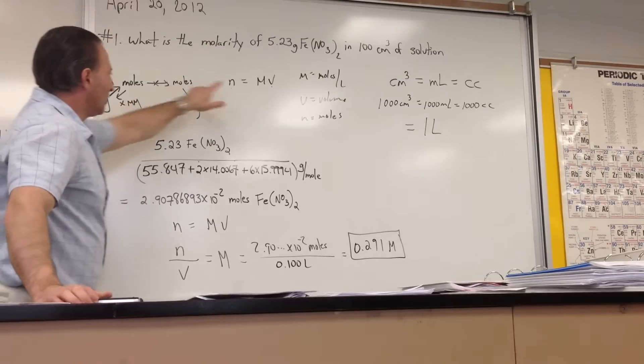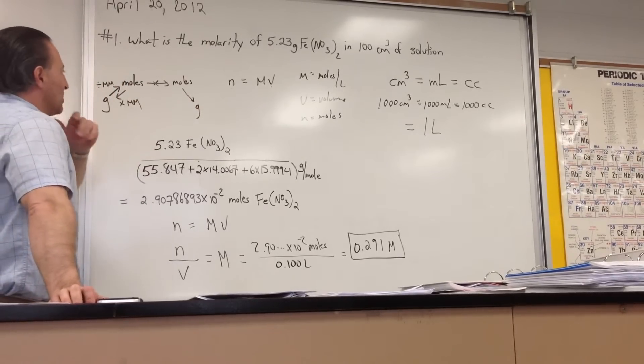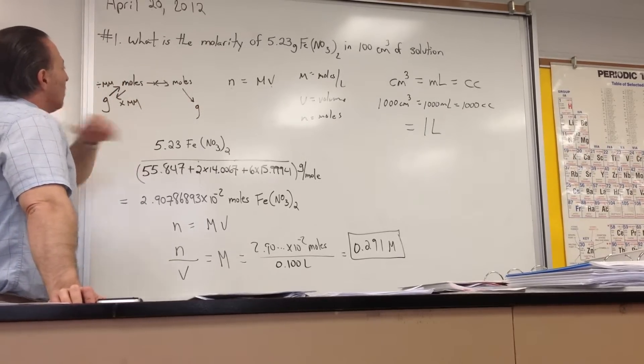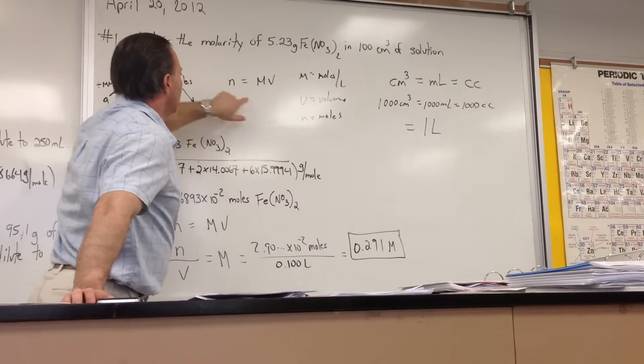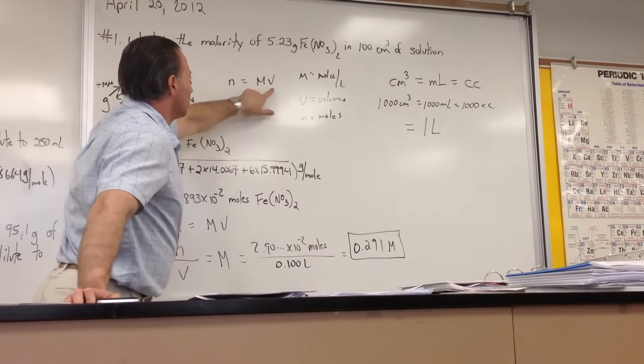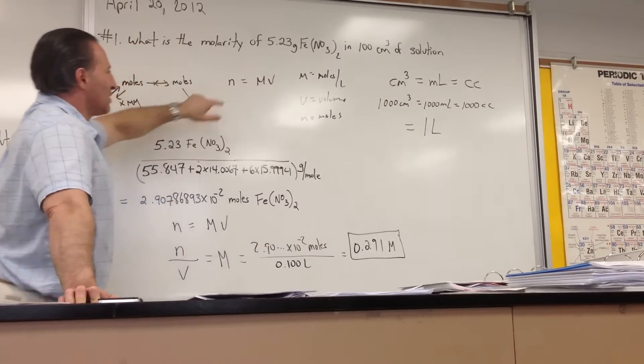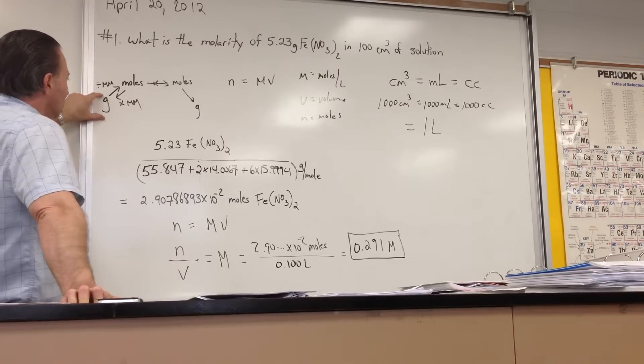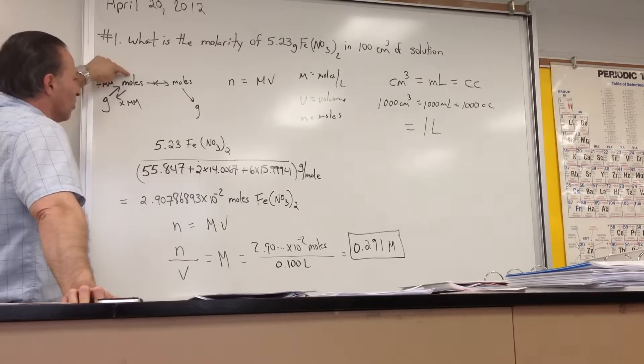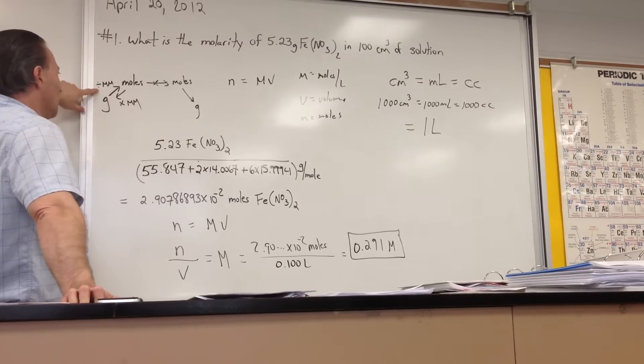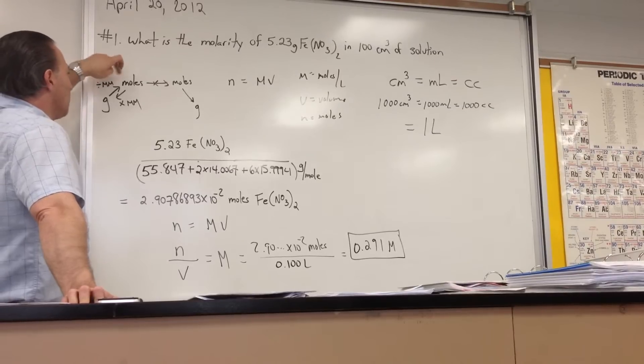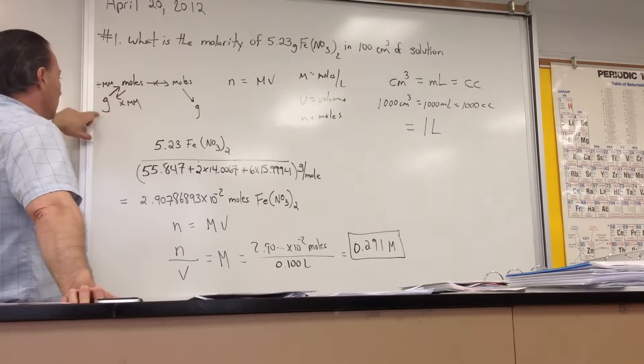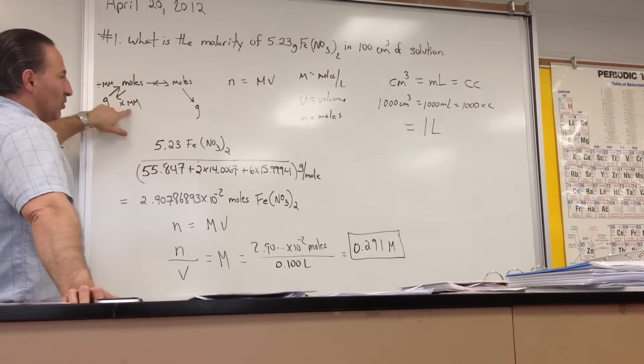Two conversion factors are helpful. One is that the molarity times the volume of the solution gives you the number of moles of solute. And if you have grams of a substance and you wish to convert into moles, you must divide by the molar mass. If you have moles and you wish to convert into grams, you multiply by the molar mass.